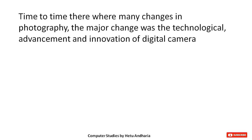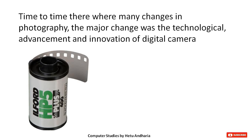Before digital cameras were invented, this type of roll, which had a negative in it, was used to click pictures. Through one roll you could click up to only 36 photos. It was very difficult — when you clicked the picture you couldn't see the result. After finishing all 36 pictures you had to give this roll to the color lab, and then they would take a printout of each photo separately on paper and give it to you.